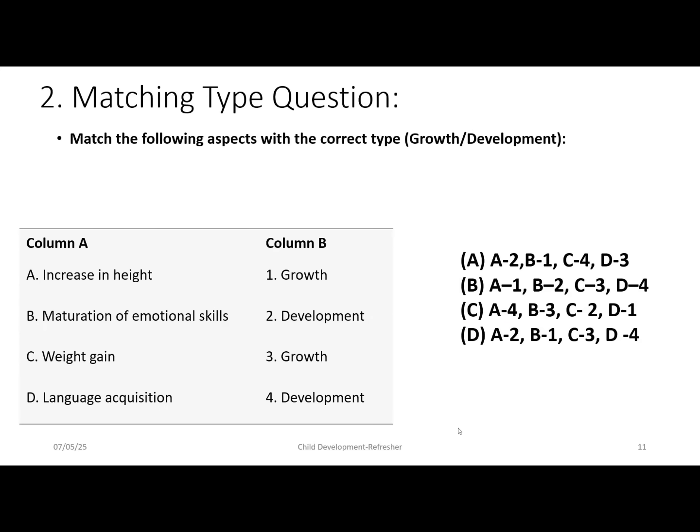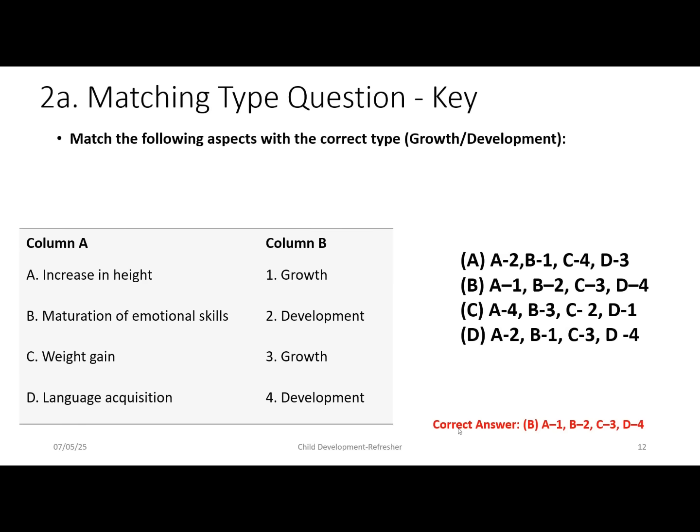The second type is a matching question. 'Match the following aspects with the correct type — growth or development.' Column A: increasing height, maturation of emotional skills, weight gain, language acquisition. Column B: growth, development, growth, development. The correct answer is option B — increasing height is growth, maturation of emotional skills is development, weight gain is growth, and language acquisition is development.